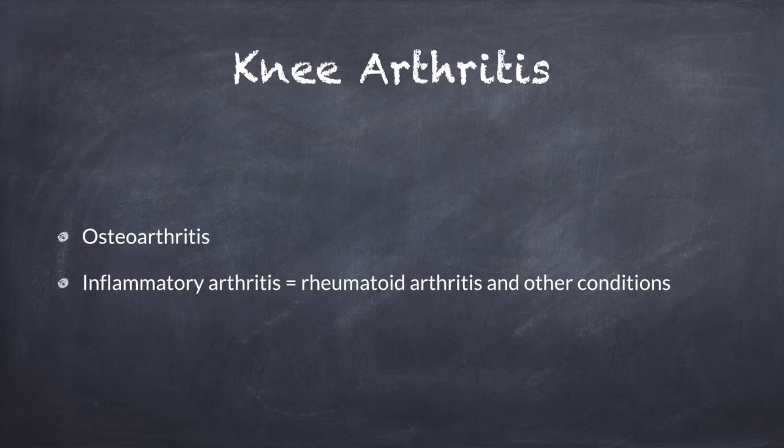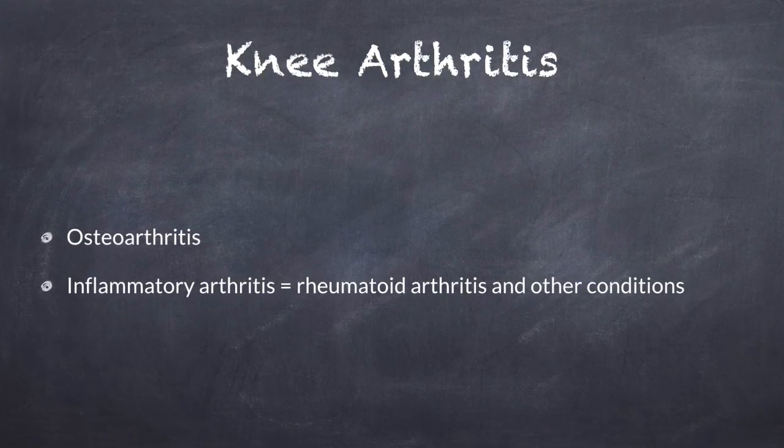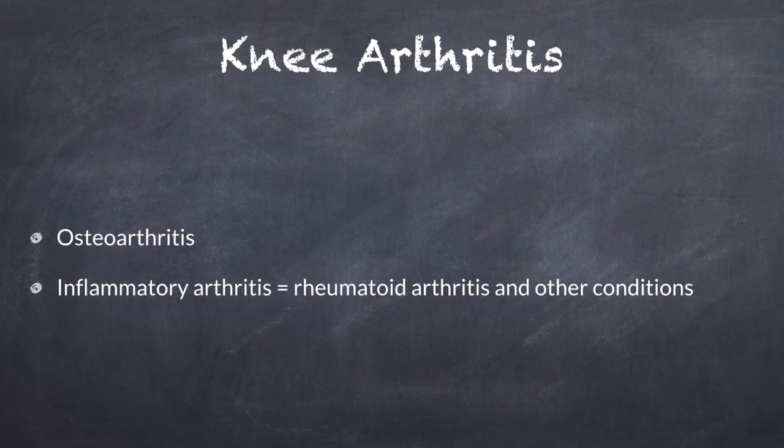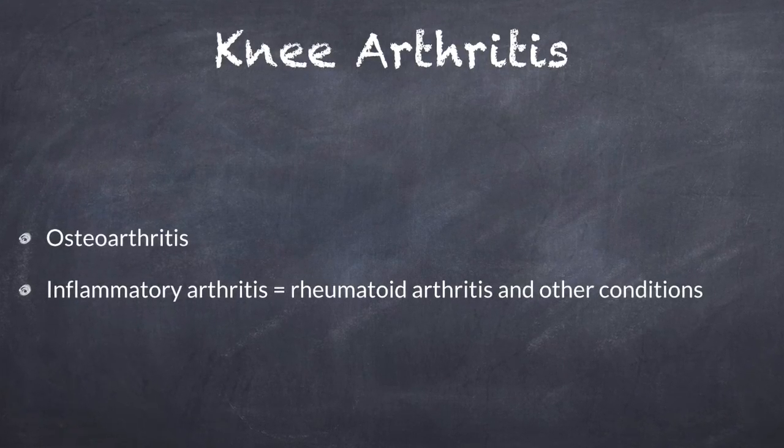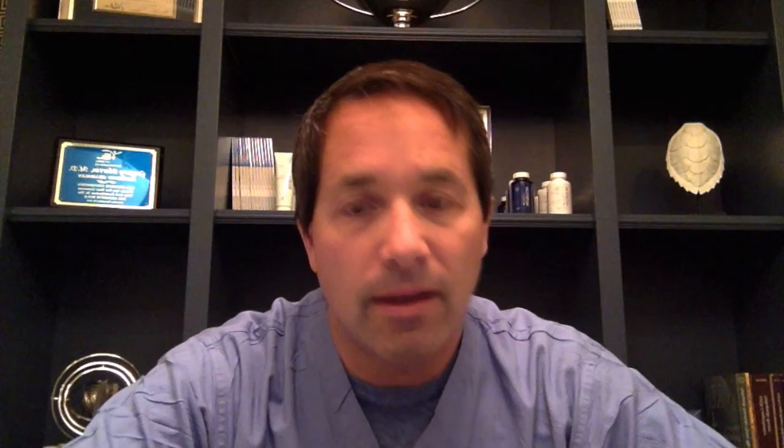When you look at arthritis, there are two types. There's osteoarthritis, which is a very mechanical condition. And then there's something called inflammatory arthritis — that's where something's gone terribly wrong in the body, where the body is actually attacking the joint. That's more serious, but fortunately more rare. That includes conditions like rheumatoid arthritis, gout, psoriatic arthritis, and a bunch of other things. The main thing I want to focus on is osteoarthritis.